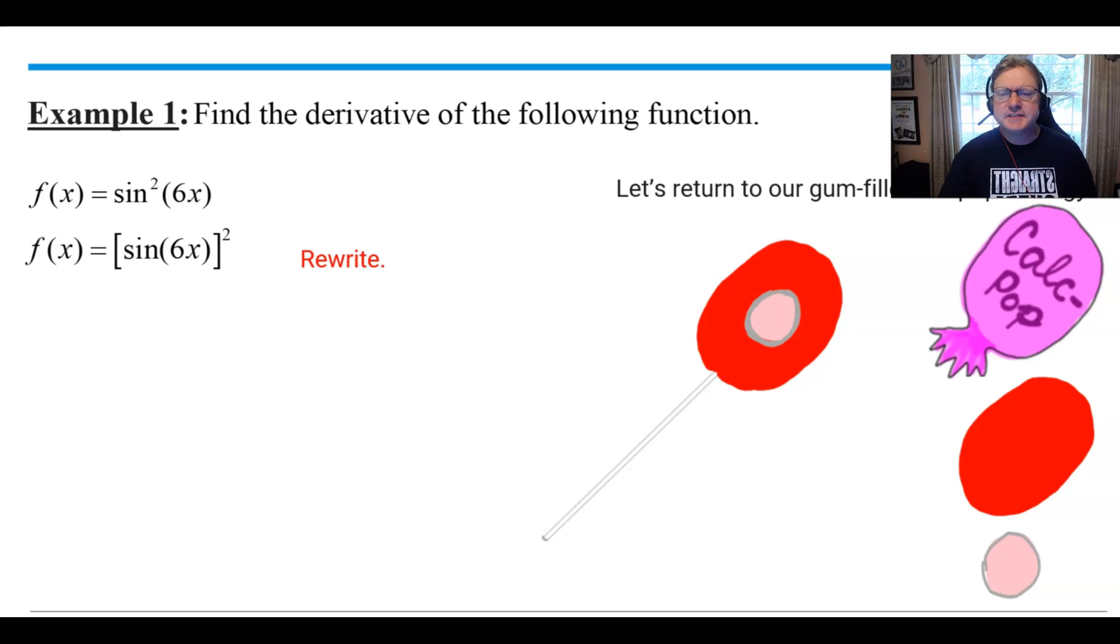I'm going to suggest, especially early on, that you rewrite the problem so that you can put the square around the outside of the sine of 6x. So we have sine of 6x quantity squared. With that you're going to be able to better handle what you have inside and what you have on the outside.